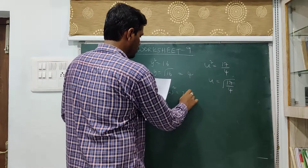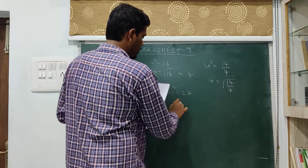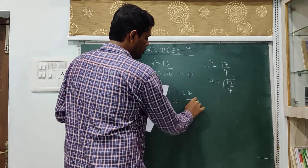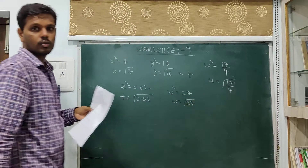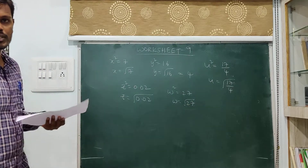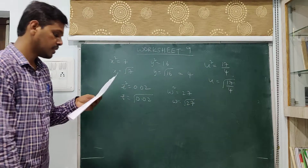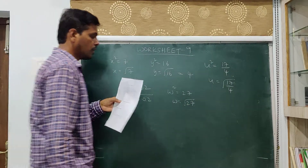Next: w squared is equal to 27. w is equal to root 27. Root 27 cannot be extracted. Therefore, that is an irrational number.